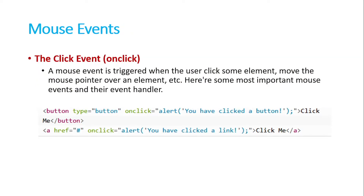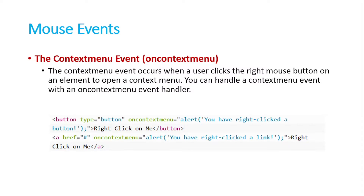A mouse event is triggered when the user clicks some element or moves the mouse pointer over an element. These events are dependent on mouse interaction. Here are the most important mouse events and their event handlers. For example, in a button tag we can use onclick and in the alert we can write 'You have clicked a button'. Another mouse event we can use is 'oncontextmenu'.